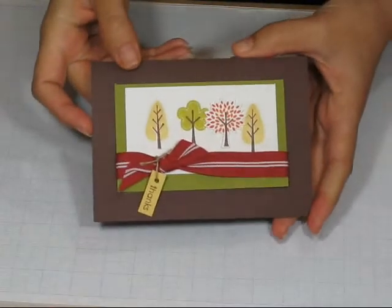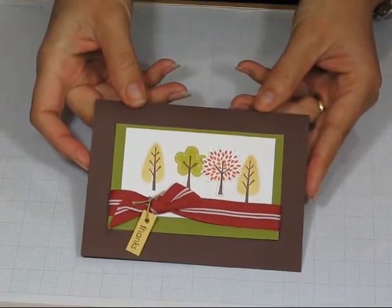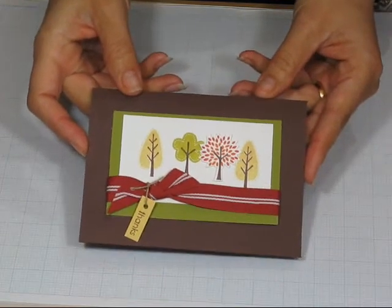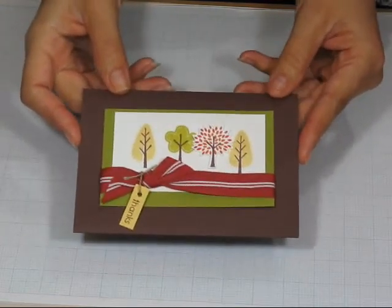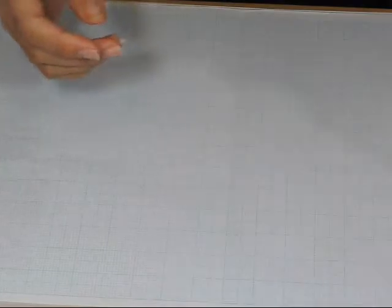So here is a sample of a finished card using that same technique and the trendy tree stamp set. So that's two-step stamping with two different pieces to an image.